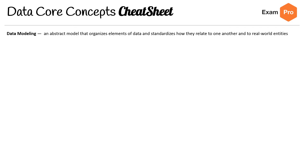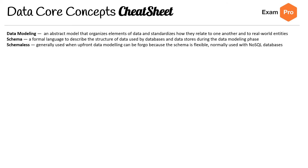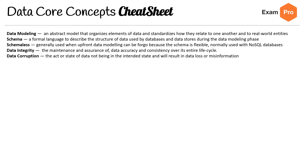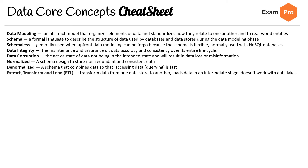On the third page: data modeling is an abstract model that organizes elements of data and standardizes how they relate to one another in the real world. Schema is a formal language describing the structure of data used by databases during the data modeling phase. Schemeless is generally used when upfront data modeling can be foregone because the schema is flexible — normally used with NoSQL databases. Data integrity is the maintenance and assurance of data accuracy and consistency over its entire lifecycle. Data corruption is when data is not in its intended state, resulting in data loss or misinformation. Normalization is a schema designed to store non-redundant and consistent data. Denormalization is a schema that combines data so that access is fast. ETL transforms data from one data store to another and loads data in an intermediate stage — it does not work with data lakes.